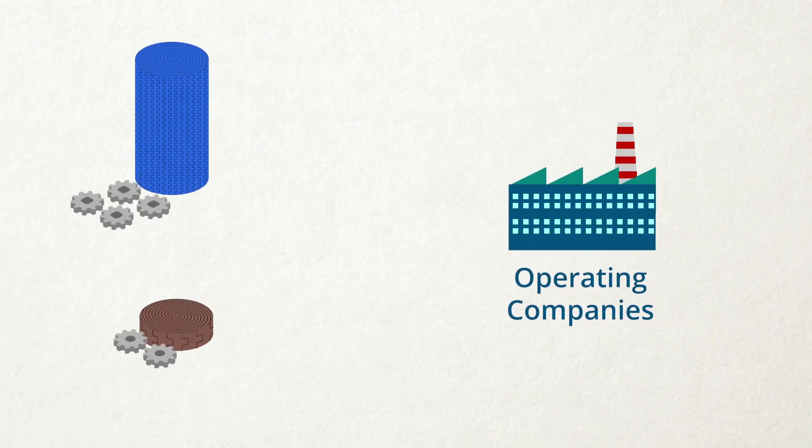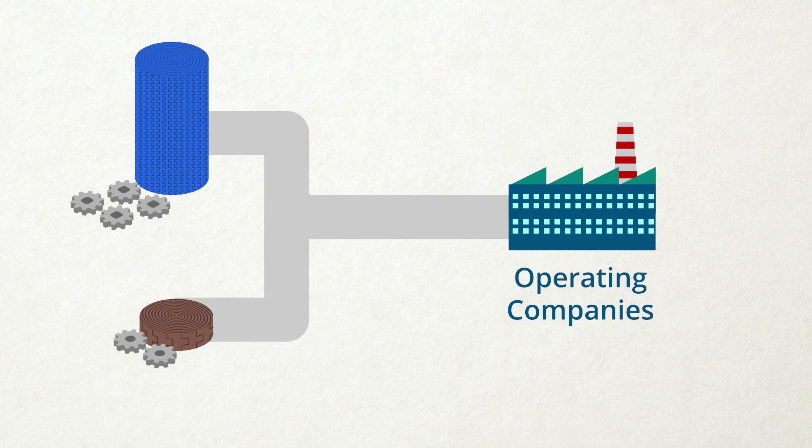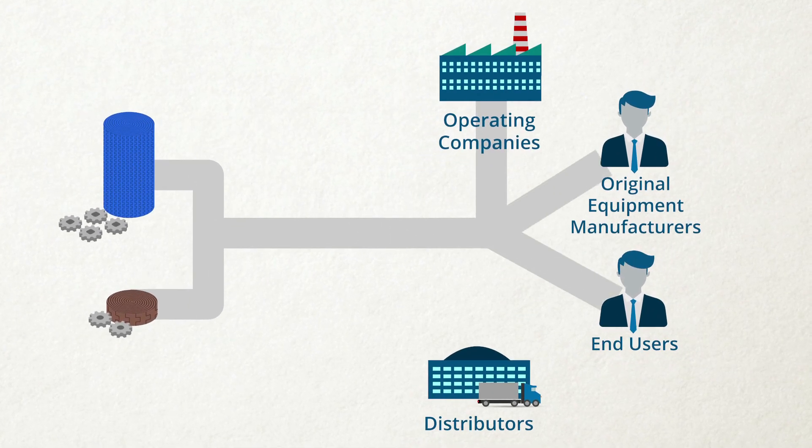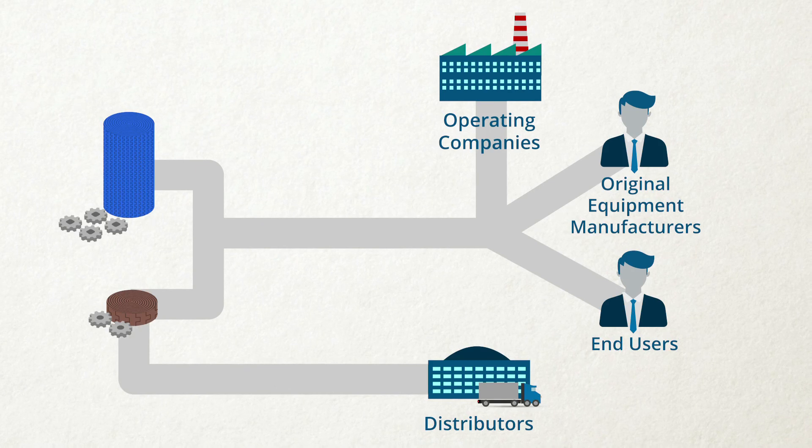Once assembled, the belts or chains are delivered to operating companies or they are delivered directly to OEMs and end users. Our products also find their way to the market via distributors.